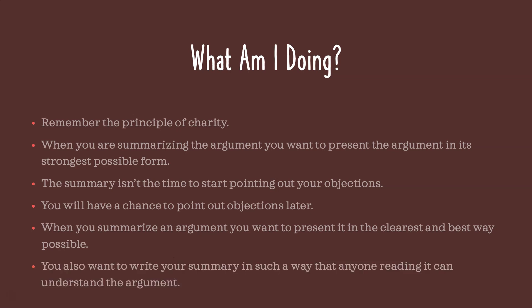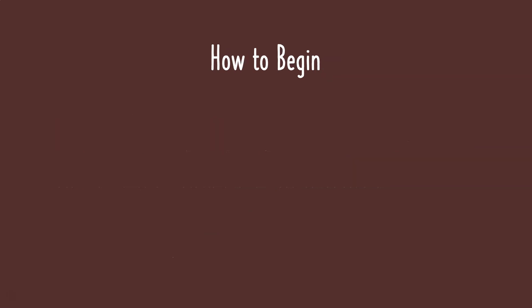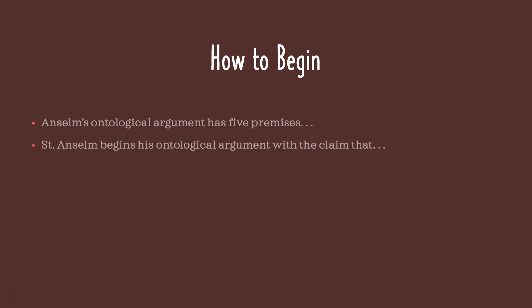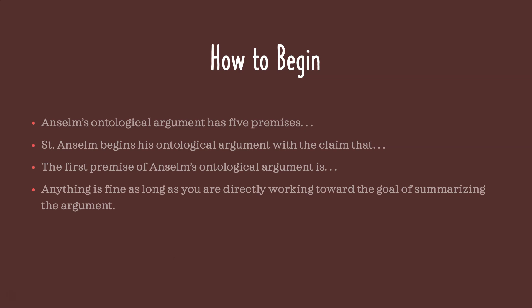You also want to write your summary in such a way that anyone reading it can understand the argument. Here are a few possible ways you might start — and there are any number of other ways. You might start by saying, 'Anselm's ontological argument has five premises,' or 'St. Anselm begins his ontological argument with the claim that,' or 'The first premise of Anselm's ontological argument is.' You can really start any way as long as you're directly working towards the goal of summarizing the argument.